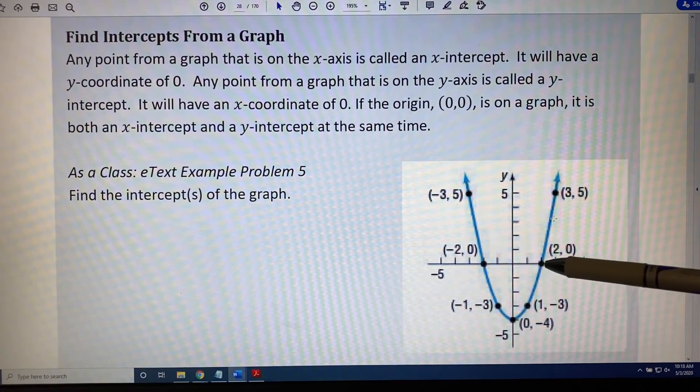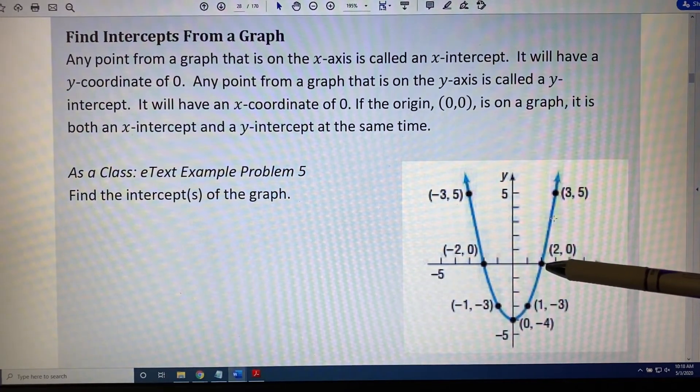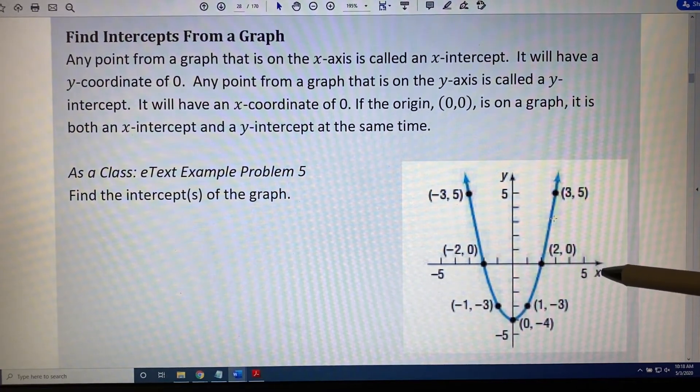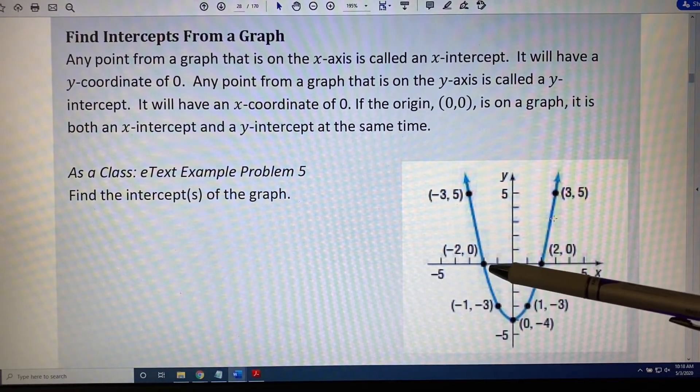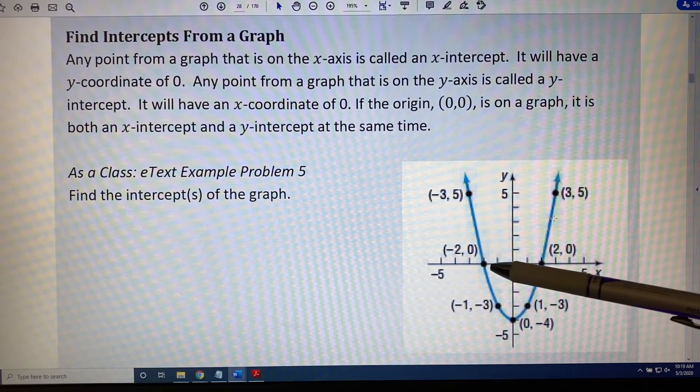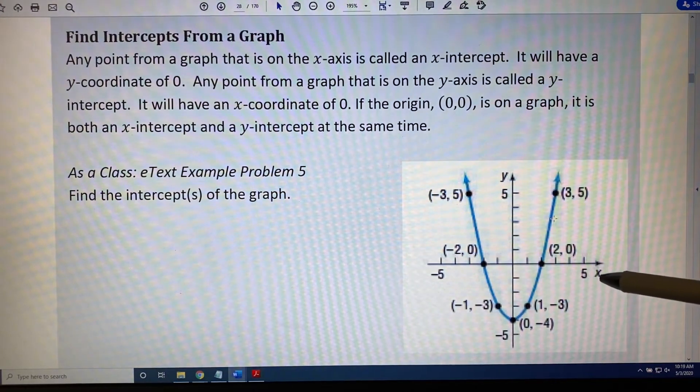So for example, this point right here, (2, 0), is on the parabola and on the x-axis. That makes it an x-intercept. This point right here, (-2, 0), is on the parabola and on the x-axis. That makes it an x-intercept as well.